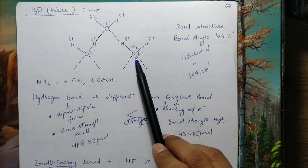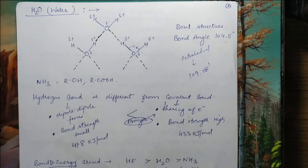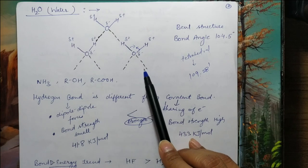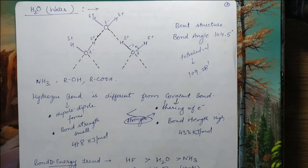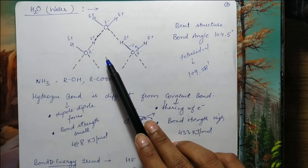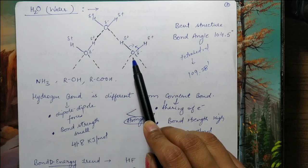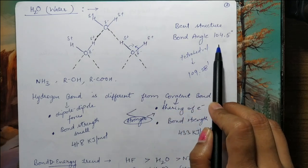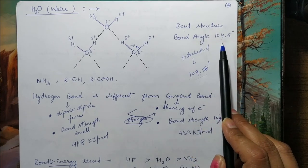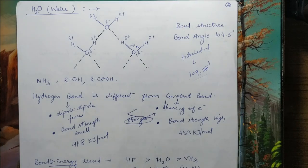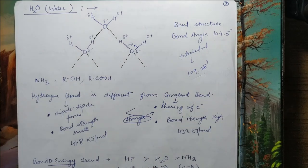You can see two partial negative charges and two partial positive charges — this is a dipole, making it a polar molecule with extensive hydrogen bonding. We know that water has a tetrahedral geometry, but due to the presence of lone pairs on oxygen, the bond angle is reduced to 104.5 degrees, rather than the ideal tetrahedral angle of 109°28'. So there is extensive hydrogen bonding in the case of water. Other examples of hydrogen bonding include alcohols, acids, carboxylic acids, and ammonia. Hydrogen bonding is different from covalent bonds — hydrogen bonds are dipole-dipole interactions, whereas covalent bonds involve sharing of electrons. Hydrogen bonding involves weak forces.